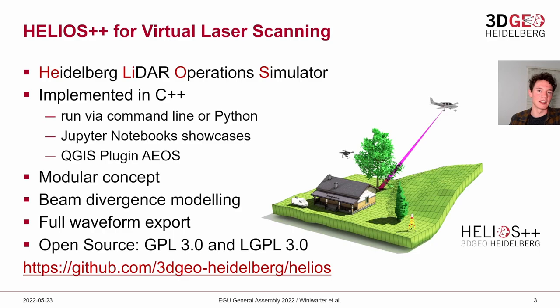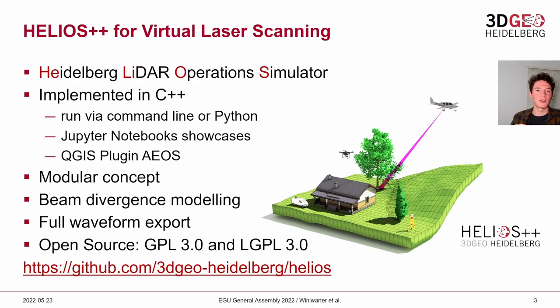Helios++ follows a modular concept, meaning you can interchange the different models very easily. For example, if you have an existing scene model that you use for an ALS survey, you can change it to run on a TLS survey just by changing a few lines in the configuration. It also supports the modeling of beam divergence and the export of full waveforms, and it is published as open source under the GPL and LGPL licenses. We invite you to check it out on our repository website.